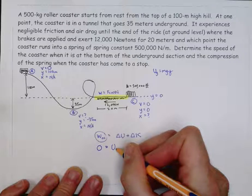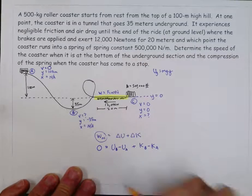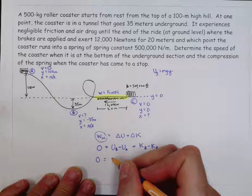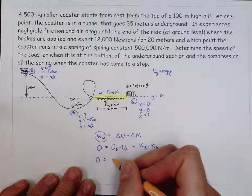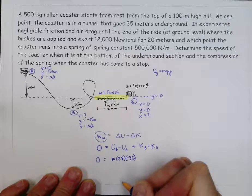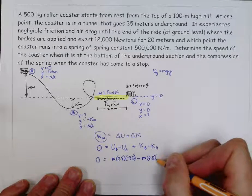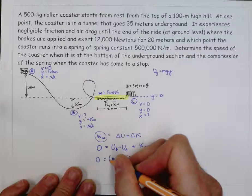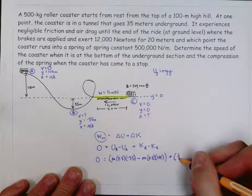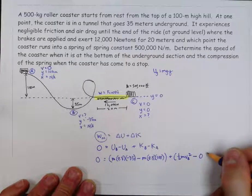And then I'm going to compare the potential at b and the potential at a, the kinetic at b and the kinetic at a. So let's see. At b, the potential energy would be the mass times 9.8 times the y-coordinate, negative 35. The potential energy at a would be the mass times 9.8 times the y-coordinate, which is 100. How about the kinetic energy? Well, we're trying to figure out how fast it's going at b. So I'm going to write one-half mv at b squared, because I don't know the speed at b. But then at a, it starts from rest, so that's zero.